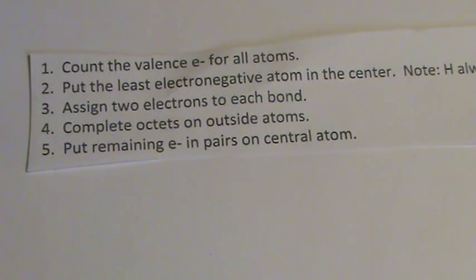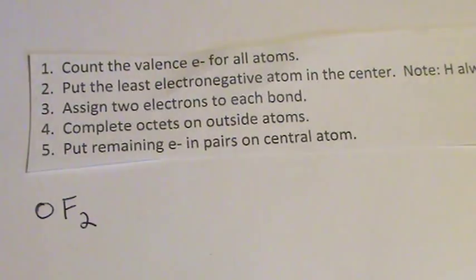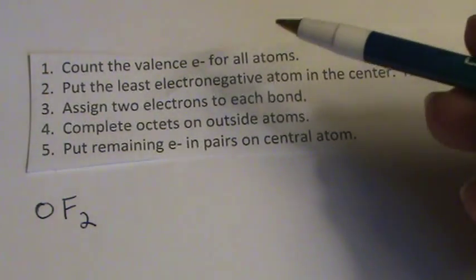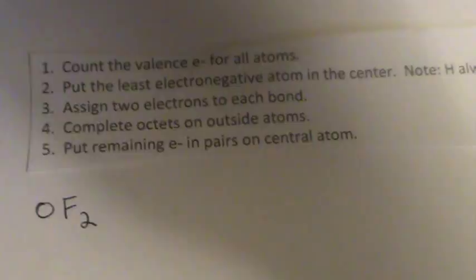For this one we've been given OF2, and it's a little bit more challenging, but not too much. We'll have a lot of valence electrons, it looks like. So let's count them. Our first step is to count the valence electrons. And for that we need a periodic table.